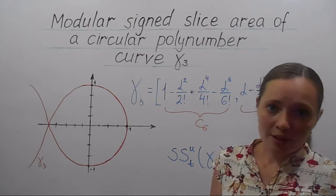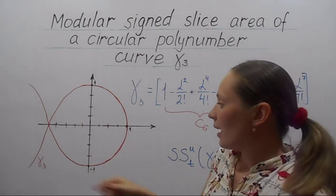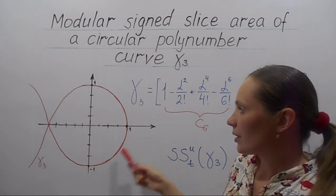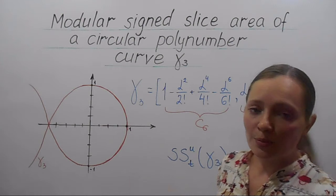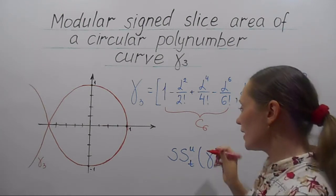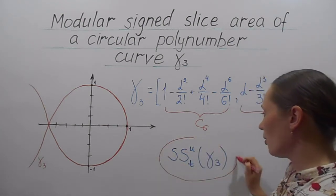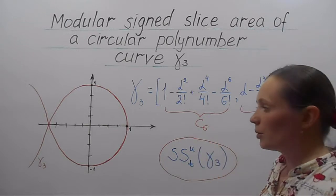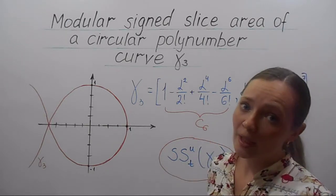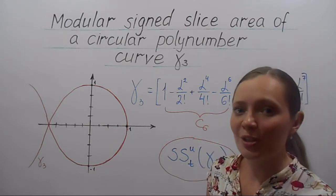The graph of this curve looks like this, and you can see that this part of the graph is very similar to the unit circle. Therefore, finding the sine slice area of this curve will help us later to approximate the sine slice area of the unit circle.